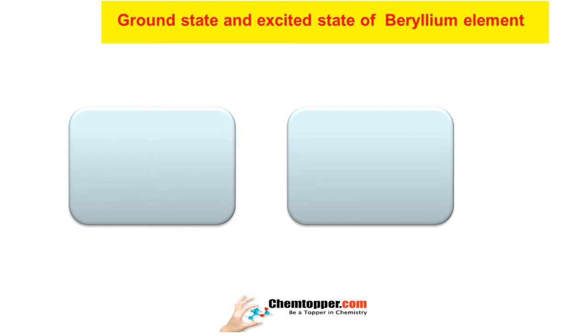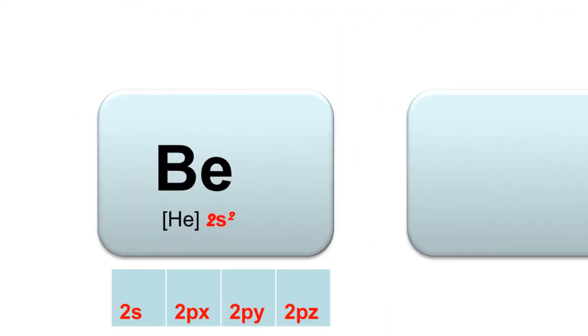For example, beryllium atom has two electrons as a pair in the 2s orbital in the outer shell. So these two electrons we put as two dots as a pair on the beryllium atom in this Lewis dot symbol.